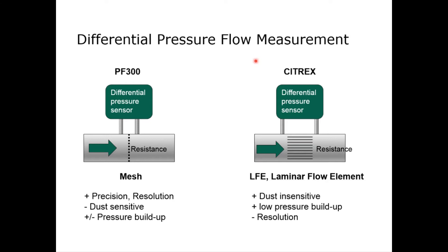Flow measurement, as we do it, is in general a differential pressure measurement via a resistance. So if the flow goes through this resistance, goes through the device, a differential pressure is built up and it is measured by the differential pressure sensor. This is the same in the Citrix as well as the PF300. The difference is what kind of resistance we are using.